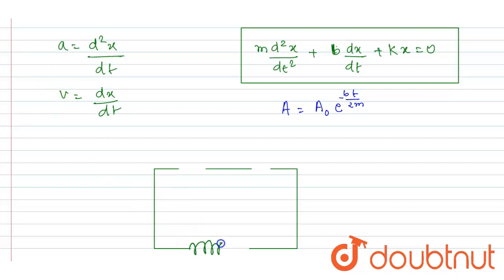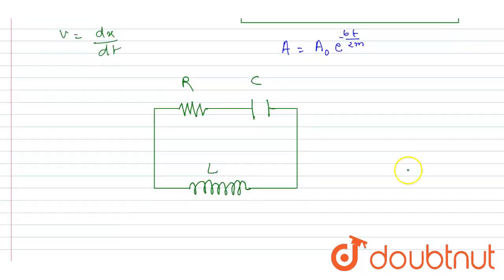Let's say this is the inductor, this is the resistor, capacitor - C, R, L. At any time the current flowing is I and the charge on it is Q.